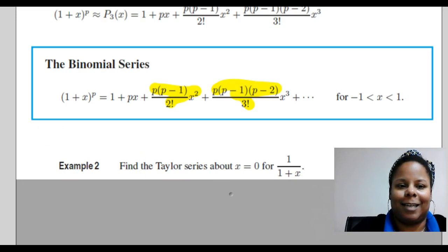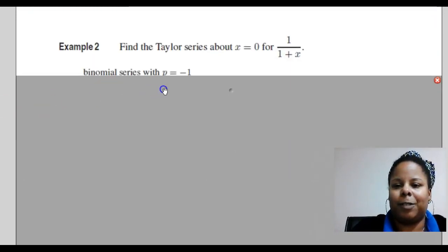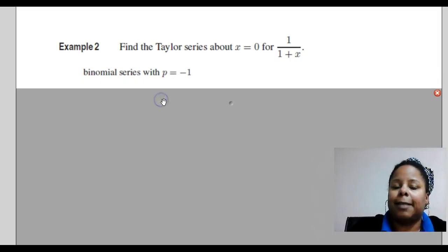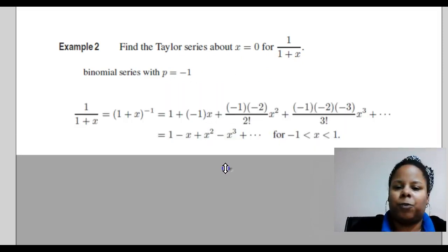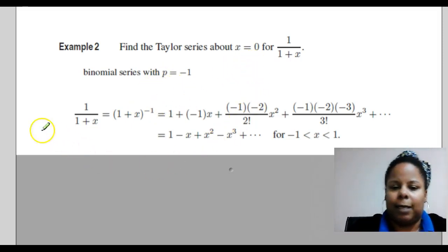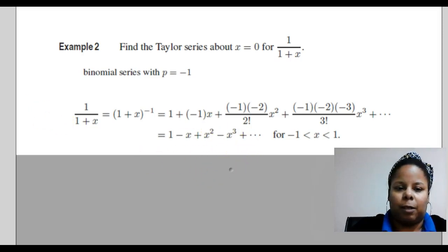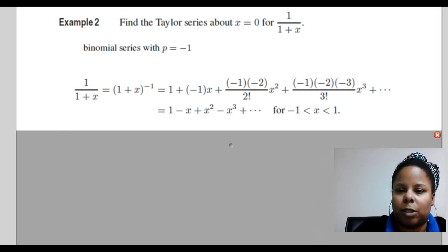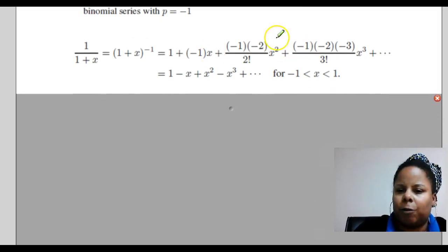Now let's take a look at an example: find the Taylor series about x equals 0 for 1 over 1 plus x. I think J1 had 1 over 1 minus x, so this is very similar. This is a binomial series where p equals negative 1. We find the derivatives of 1 plus x to the negative 1, keep finding derivatives, and evaluate at x equals 0. We end up with an expression like this. We must conclude that the Taylor series only equals the function value as long as x is in the radius of convergence, which we can find after we have the terms of the series.